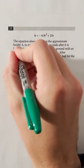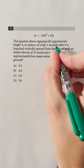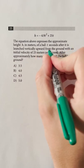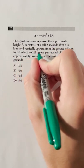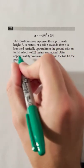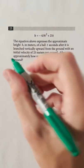The equation above expresses the approximate height h in meters of a ball t seconds after it is launched vertically upward from the ground with an initial velocity of 25 meters per second. After approximately how many seconds will the ball hit the ground?